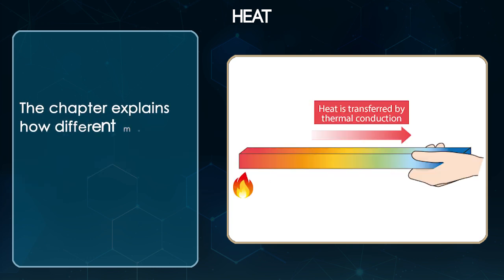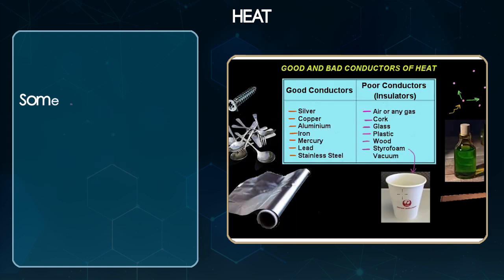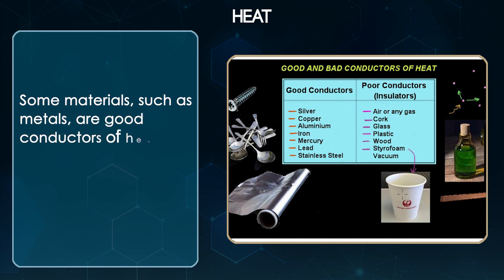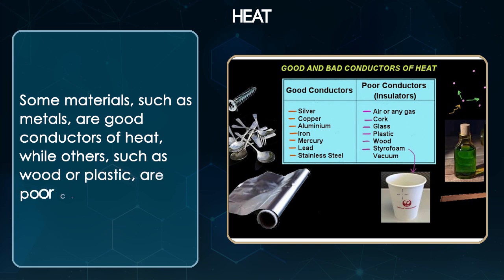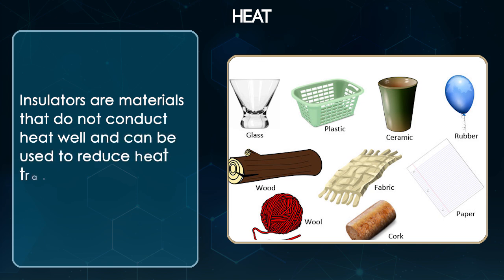The chapter explains how different materials conduct heat differently depending on their thermal conductivity. Some materials such as metals are good conductors of heat, while others such as wood or plastic are poor conductors. Insulators are materials that do not conduct heat well and can be used to reduce heat transfer.